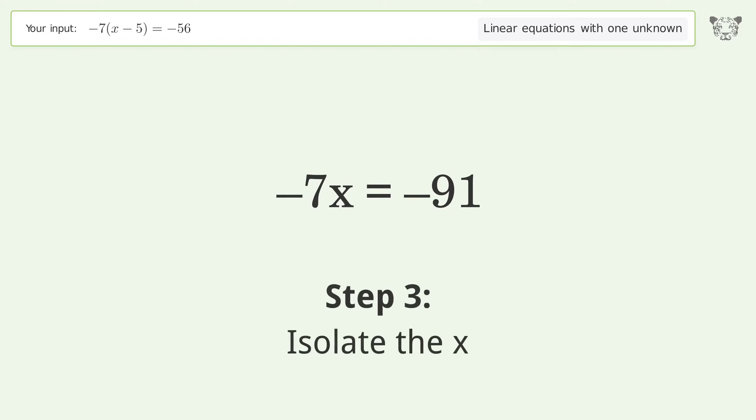Isolate the x. Divide both sides by negative 7. Cancel out the negatives.